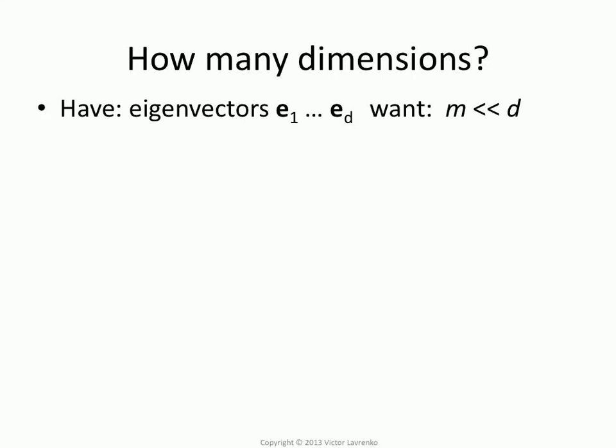How many should we choose? When you do eigendecomposition, you're going to end up with as many eigenvectors as you had original dimensions. So if you had d coordinates, you're going to end up with d eigenvectors. We want to reduce the dimensionality, so we want to pick m which is smaller than d, hopefully a lot smaller.